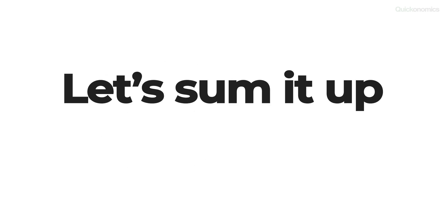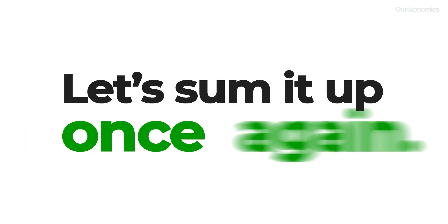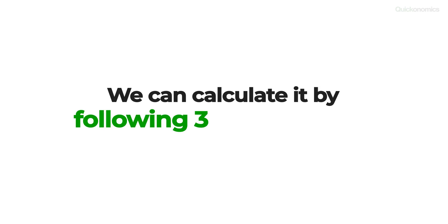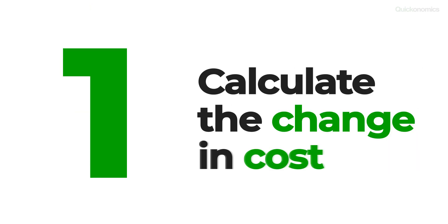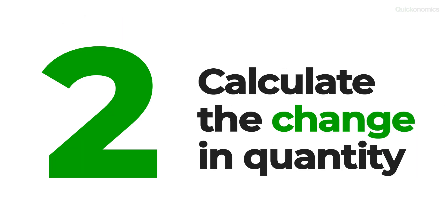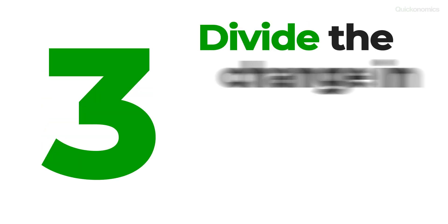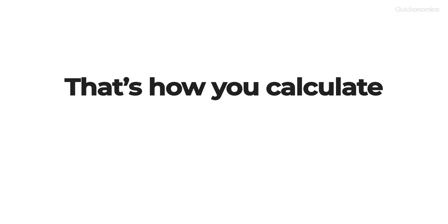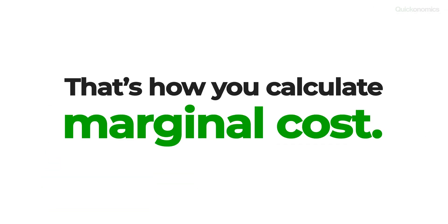Alright, let's sum it up. Marginal cost is defined as the cost added by producing one more unit of a good or service. We can calculate it by following three simple steps: first, we calculate the change in cost; second, we calculate the change in quantity; and third, we divide the change in cost by the change in quantity. And that's how you calculate marginal cost.